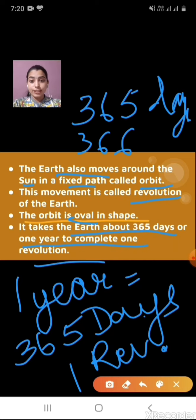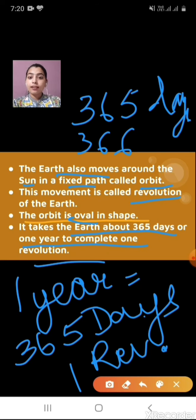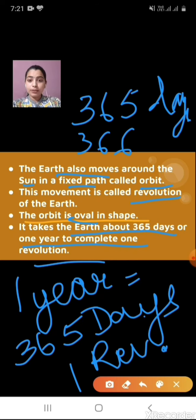In rotation, how much time does earth take? It takes one day or 24 hours to complete one rotation. And due to rotation, day and night happen — day and night are caused because of the rotation of the earth.